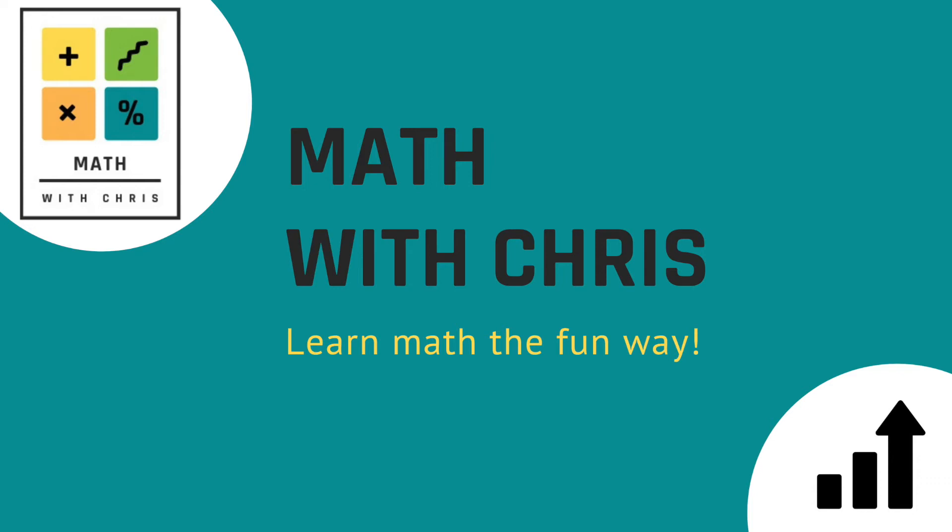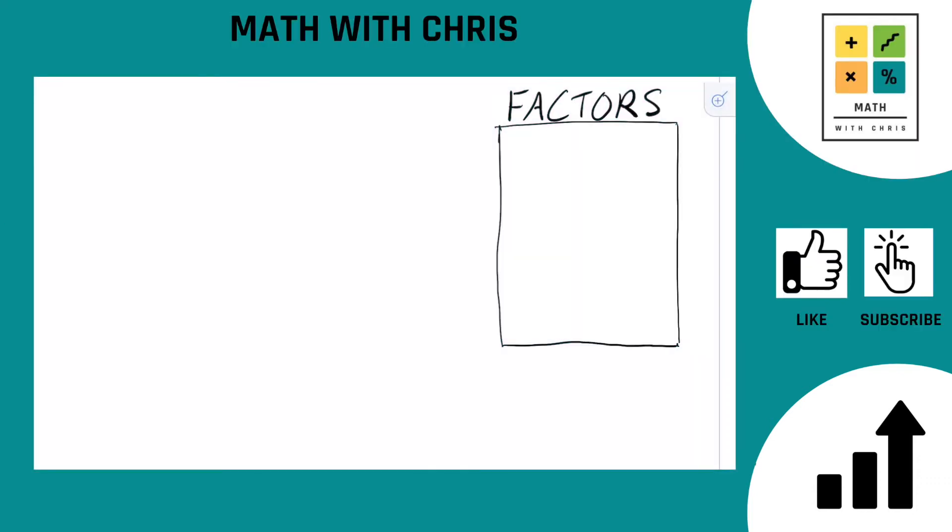What's going on everybody? Math with Chris and we are going to find some factors of 36, not some factors, all the factors. 36 is a bit of a tough one, heads up. There are a bunch of factors on this one, so it's going to take some steps.